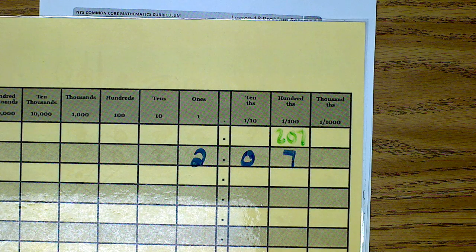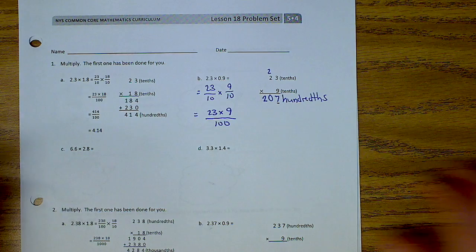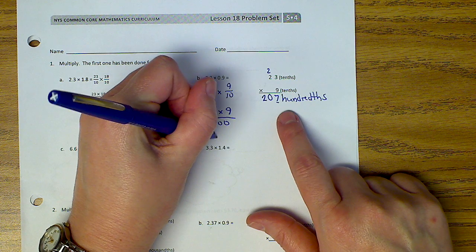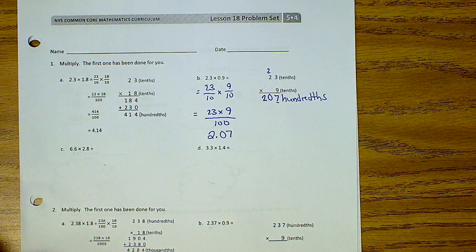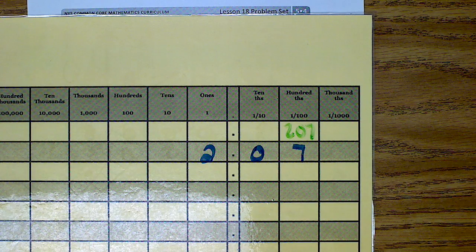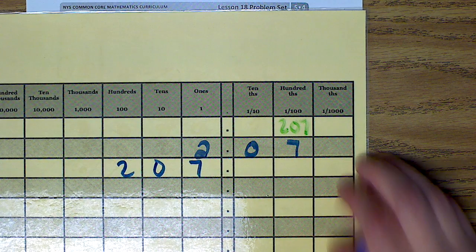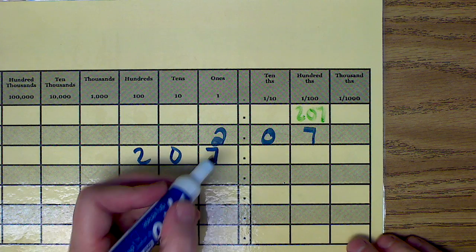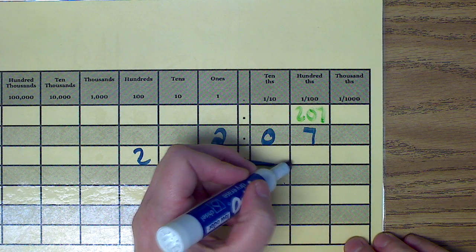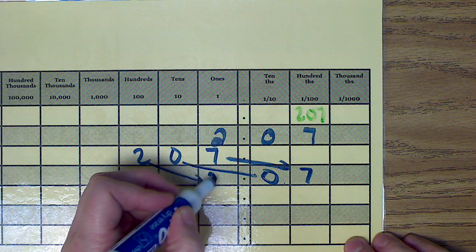So I would end up with two and seven hundredths. Instead of two hundred seven hundredths, I would end up with two decimal zero seven. Because if I have the number two hundred seven, and I have a hundred on the bottom, my numbers go two places to the right, so that seven would go there, and the zero would go here, and the two would go there.